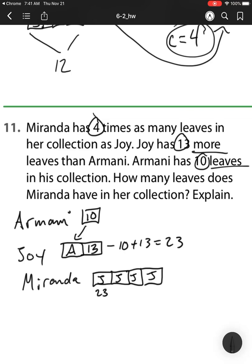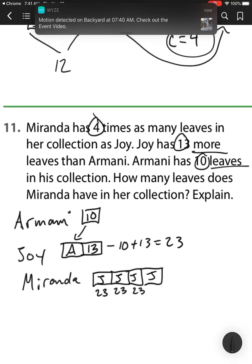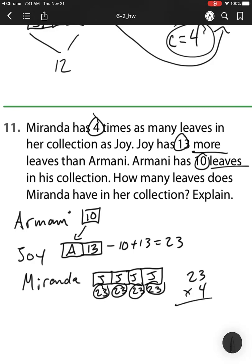So Joy has 23 leaves. So that means each of these boxes is 23. So I'm going to do 23 times 4 groups, because there's 4 groups of 23. 4 times 3 is 2. Regroup. 4 times 2 is 8. Plus 1 is 9. Okay, so Miranda has 92 leaves. Joy has 23.